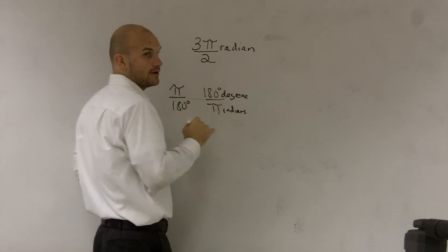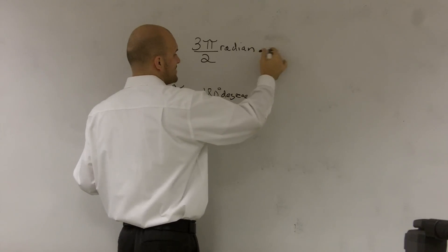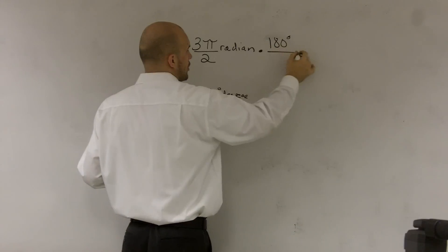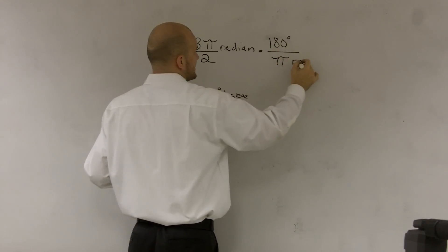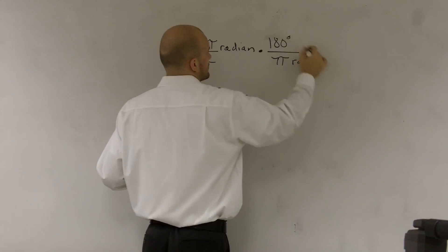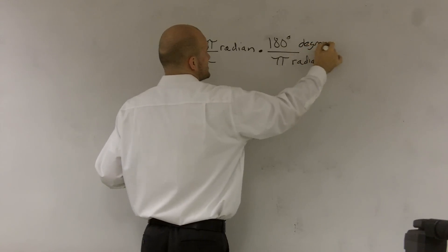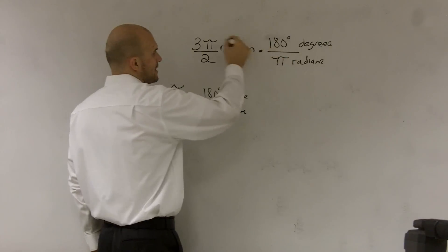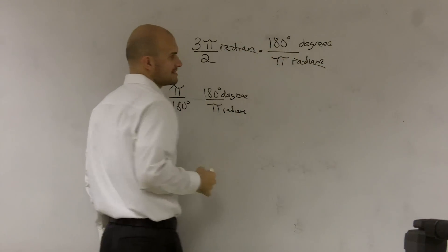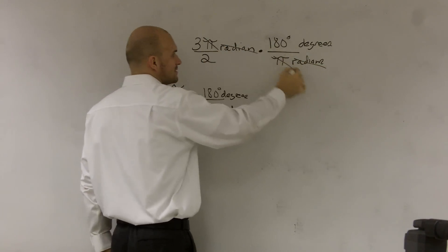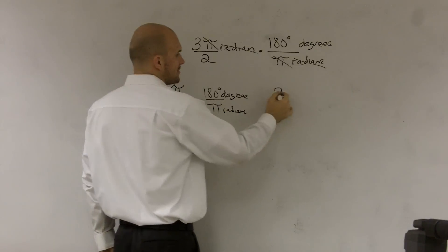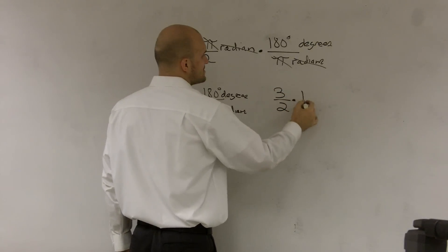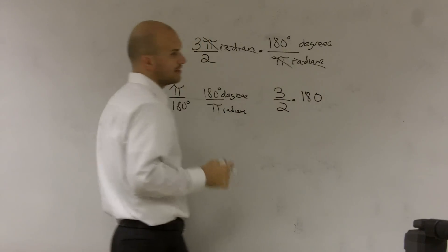So therefore, I'll rewrite this as times 180 degrees over π radians. Then, what you guys notice is, remember, we want to find what the degrees are. So our radian divided by radian is going to, what we say, cancel out. So our π's now cancel out, so I'm left with 3 over 2 times 180.